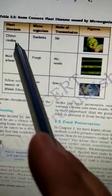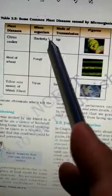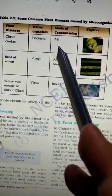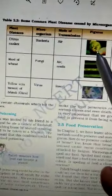First is citrus canker plant disease. The microorganism is bacteria. Mode of transmission is air. And you can see here its figure.